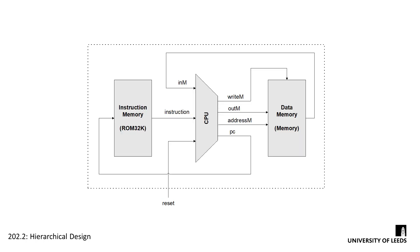If we take the lid off the black box, we can see that it's made of three major parts: the instruction memory, the data memory, and the CPU. But if we wanted to implement this in Verilog, we couldn't really just type CPU and have it work, so we need to drill down further.